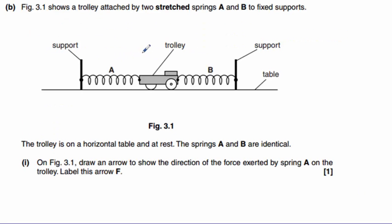Part B shows us a trolley that is attached by two stretched springs, A and B, to fixed supports. Now, it wants us to draw an arrow to show the direction of the force exerted by spring A on the trolley and to label this arrow with the letter F. Because both springs are stretched, it means that they would like to close themselves back up. There will be a force acting on the trolley here, where A is connected to the left, because the spring is trying to close up, and we're going to label that F.